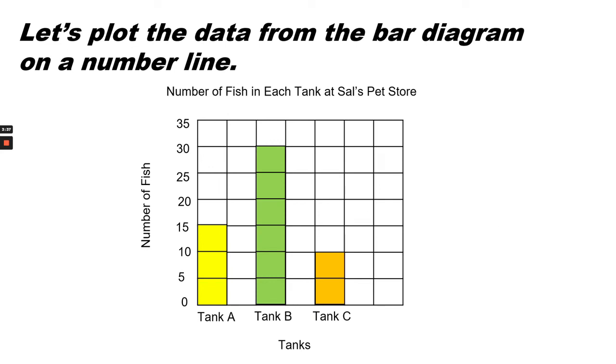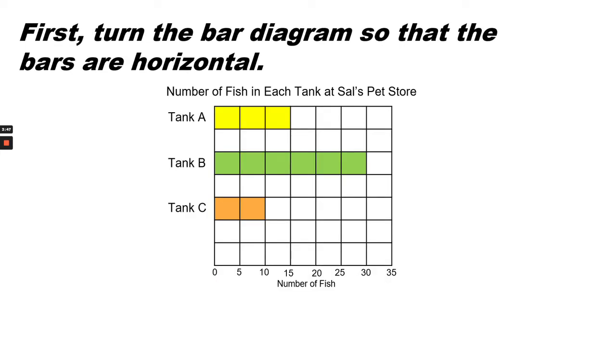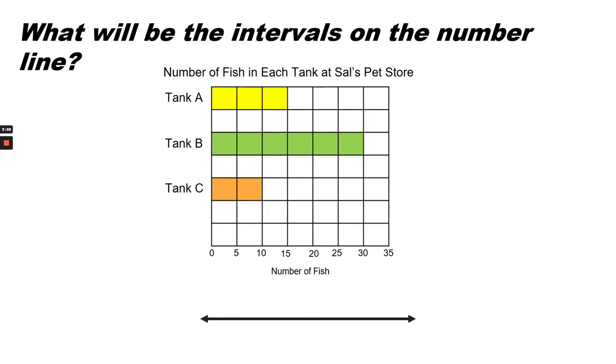Let's plot the data from the bar graph on a number line. First, turn the bar graph so that the bars are horizontal. What will be the intervals on the number line?